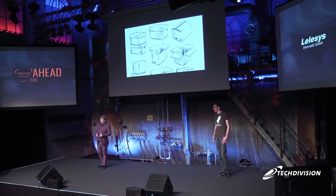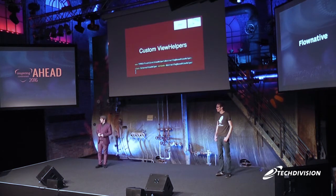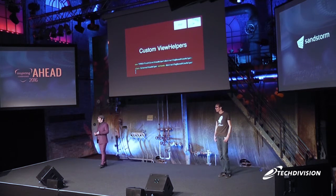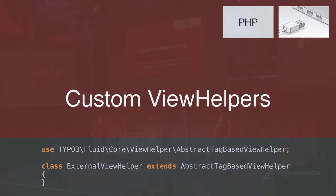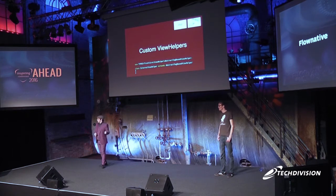The first obvious extension point in the MVC layer is a custom ViewHelper — a totally planned extension point you can put in your own package. The idea is that you can add whatever functionality you need to your views. ViewHelpers are used in your templates, and you can add any functionality you want in a template with a custom ViewHelper. You basically extend the abstract tag-based ViewHelper or abstract ViewHelper and go from there. It's really easy.